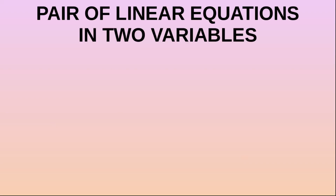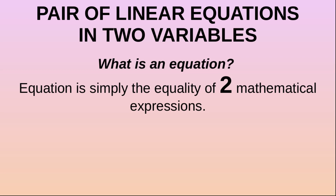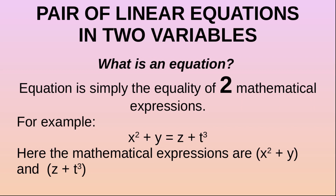In this video, we are going to talk about pair of linear equations in two variables. What is an equation? An equation is simply the equality of two mathematical expressions. For example, x squared plus y is equal to z plus t cubed. Here, x squared plus y and z plus t cubed are mathematical expressions related with an equal sign, so x squared plus y equals z plus t cubed is an equation.